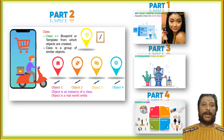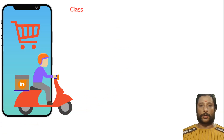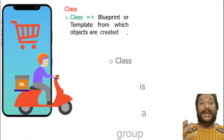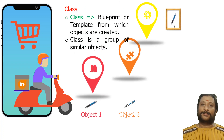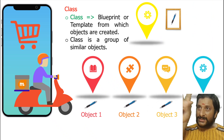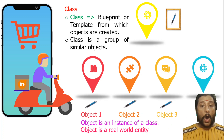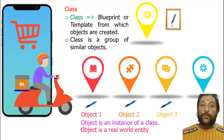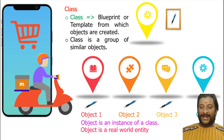Now let us move on to what is a class and object model. Your class is nothing but a blueprint or a template. Your pen in a photo — that is your class. But your real pen — that is your object. So from one photo, I can create a lot of pens. Class is a template. Object is an instance of a class and it is a real-world entity. The photo of the pen, I can't write with. But the real pen, I can write with. That is why your class-object model works.